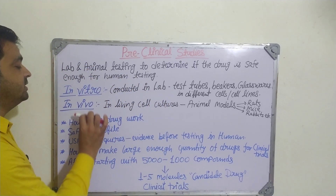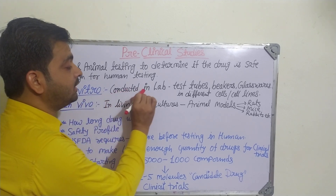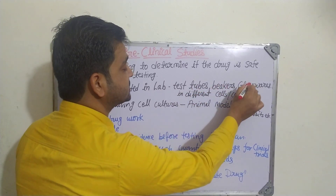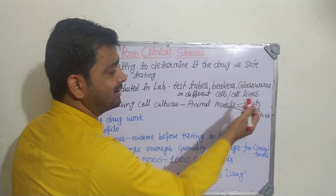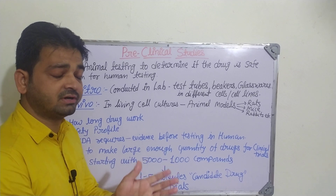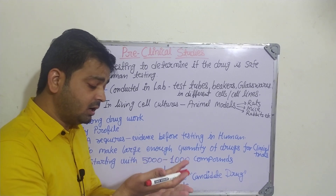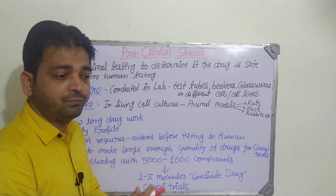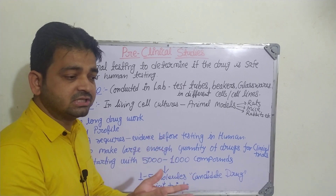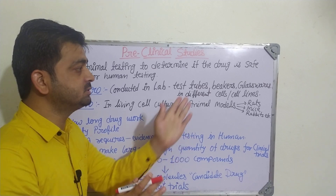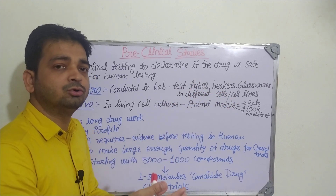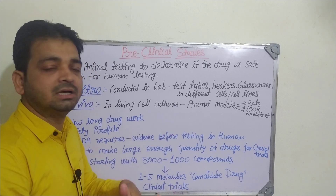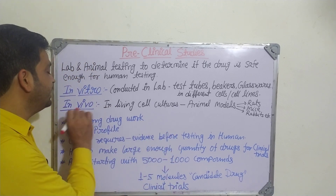So there will be in vitro and in vivo studies. In vitro means conducted in the lab — in test tubes, beakers, any glassware, in different cells or cell lines. If it is for diabetes, we need to have the beta cell lines and pancreatic cells. If it is for hepatoprotective activity, we need to have liver cells — hepatocytes — in these particular glasswares, and then we test whether the drug is giving any effect or not. Once it passes the in vitro stage, we can go for in vivo.